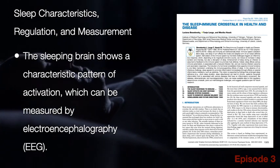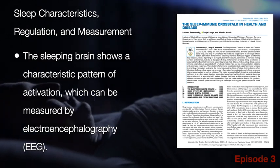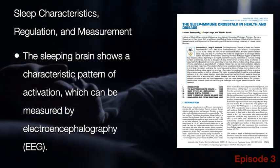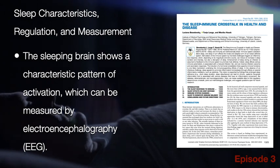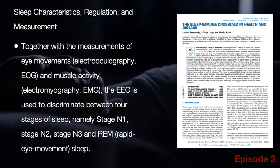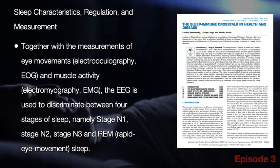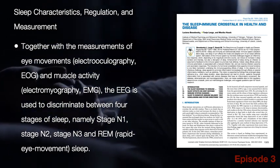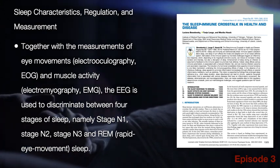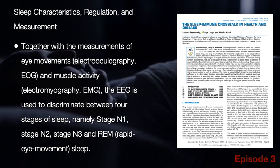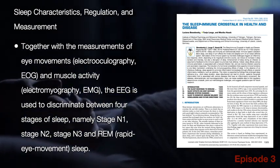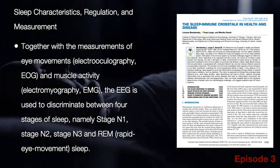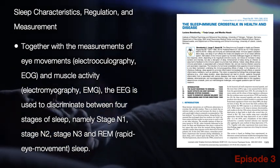The sleeping brain shows a characteristic pattern of activation which can be measured by electroencephalography, or EEG. Together with measurements of eye movements called electrooculography and muscle activity, the EEG is used to discriminate between four stages of sleep: stage N1, stage N2, N3, and REM sleep, or rapid eye movement sleep.